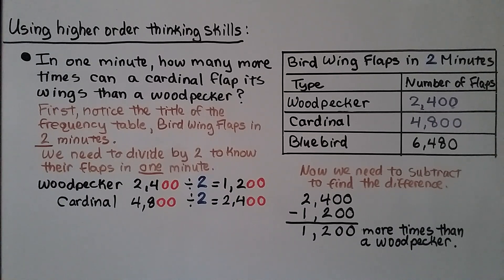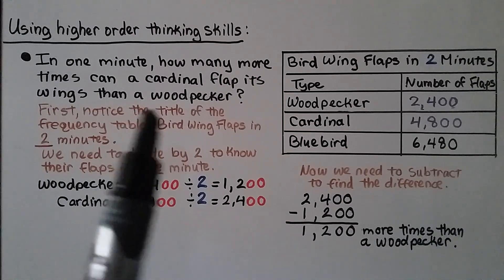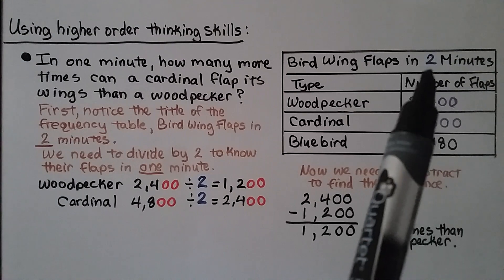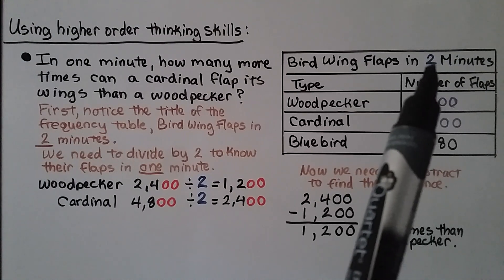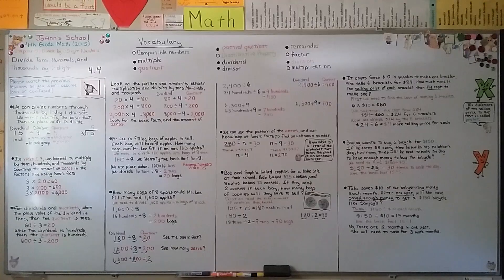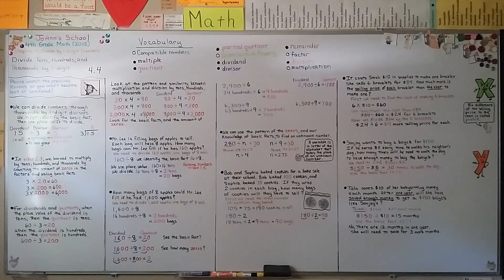Be very careful when working with tables or diagrams — look closely at the information given. If we hadn't noticed the table said two minutes, we might have used the wrong values. Our next lesson is 4.5, where we'll estimate quotients with compatible numbers. I hope you're having a really good day — I'm really proud of you, and I'll see you next time!